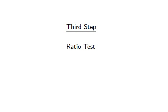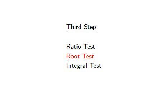If the divergence test does not answer our questions, we may move to the next set of tests: the ratio test, the root test, and the integral test. These tests are more complex than the divergence test, but they have the ability to tell us in many cases whether or not our series converges. The ratio test is often useful if fractions, powers, or factorials appear in our series. The root test is useful if only powers show up, and the integral test can be applied if the underlying sequence corresponds to a function whose integral we understand.